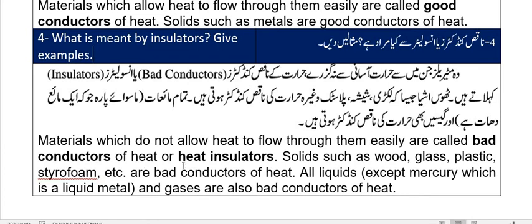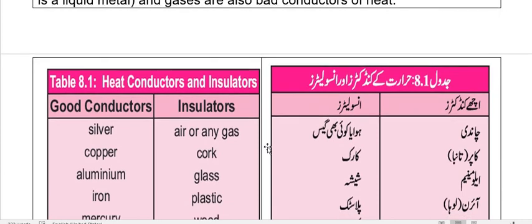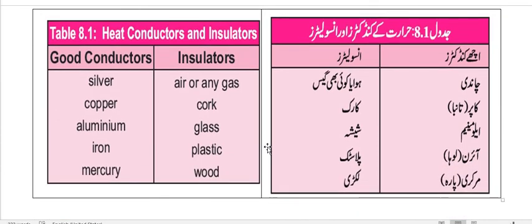Bad conductors of heat, or heat insulators, include solid glass, plastic, and styrofoam. Mercury is also considered a bad conductor in some contexts. This table shows insulators and conductors — which can be a good conductor of heat.